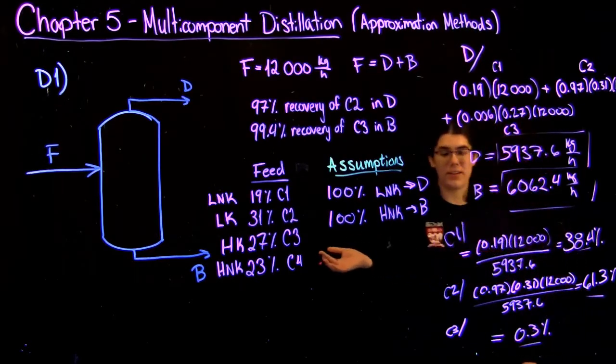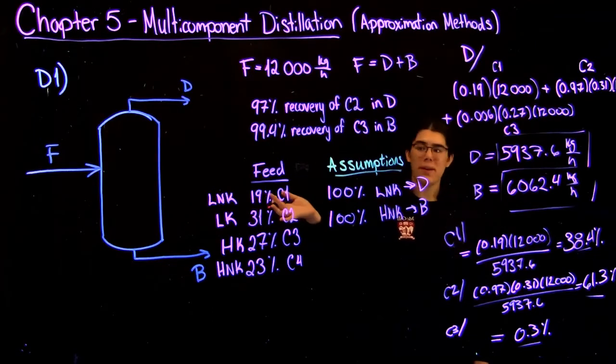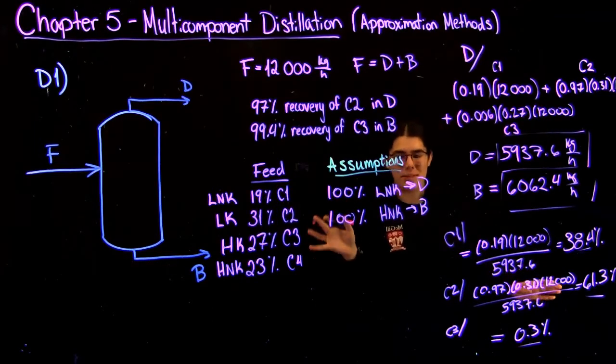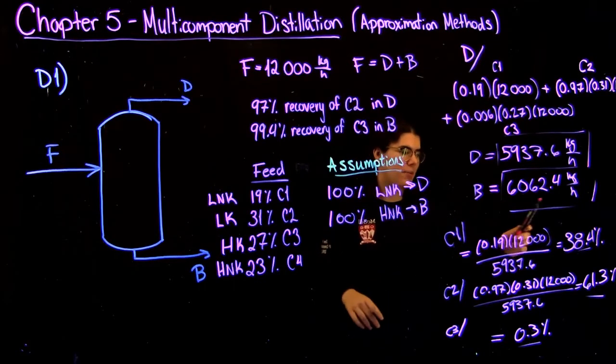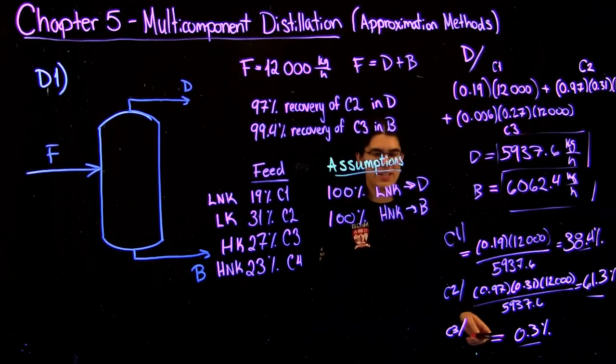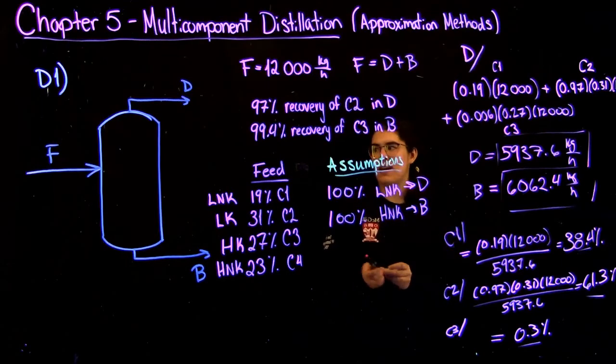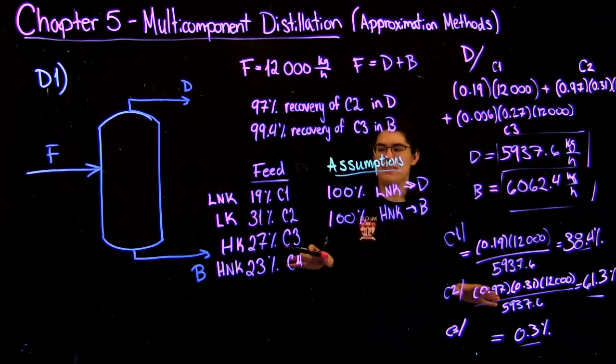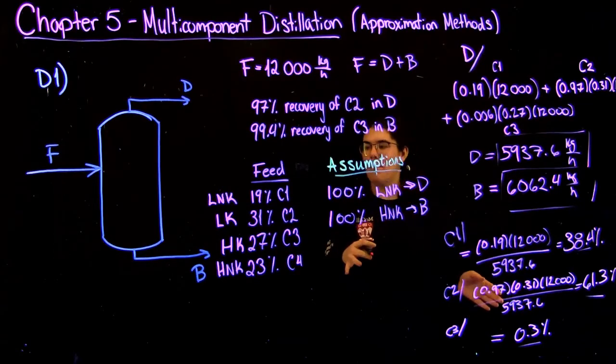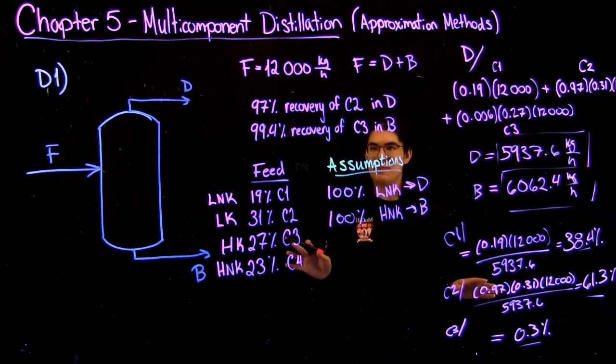And that's really all there is to it. You repeat the same thing for the bottoms. Because the math is so simple compared to a lot of other parts of the course, I really recommend double-checking your work. Make sure that your percentages add up to 100, your D plus B equals your F, because here the only way you can really make a fundamental error is if you make a silly mistake that messes up your math. Other than that, you should be good.